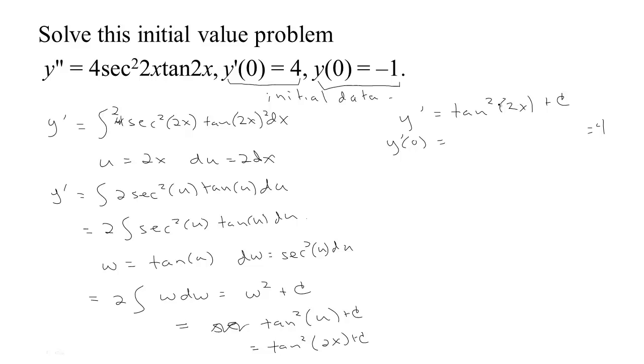So the tangent squared of 0 is 0 plus c, and this tells me then that c is 4. Now that I know that c is 4, I know y prime of x is going to be the tangent squared of 2x plus 4.